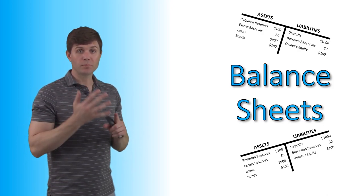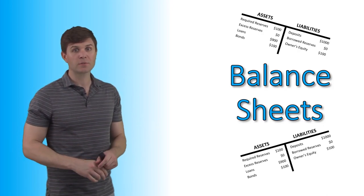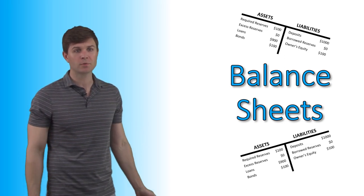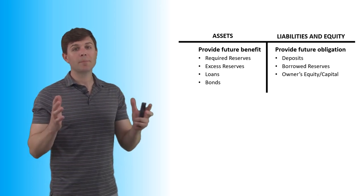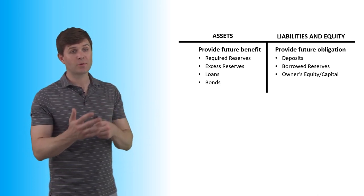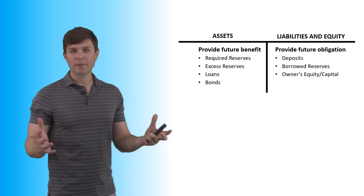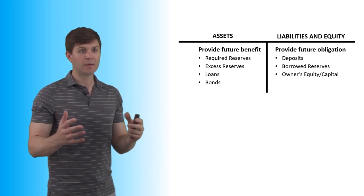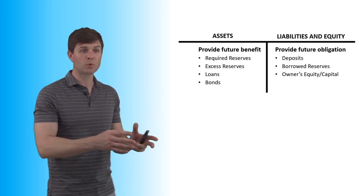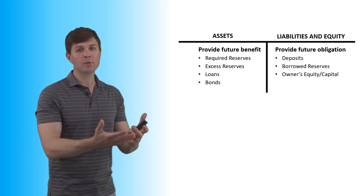Let's take a little time to review balance sheets, or T-charts as they're sometimes called, and see how this all works, especially when looking at an FRQ question. On a balance sheet you've got two sides: your assets, and your liabilities and equity. The liabilities and equity represents all the future obligations that the bank has — the deposits that customers make, whether they're labeled as demand deposits or checkable deposits, they have to pay those back at some point.